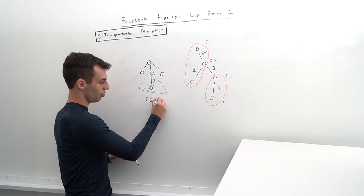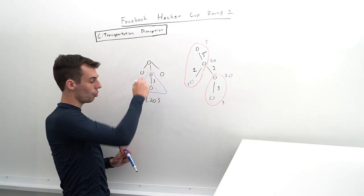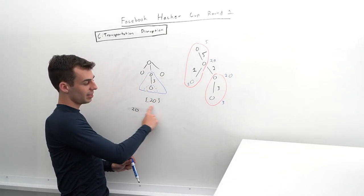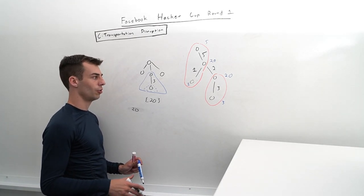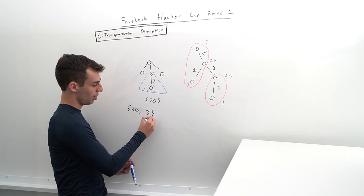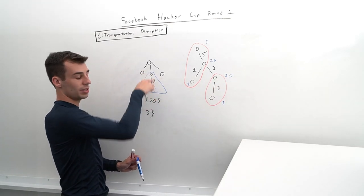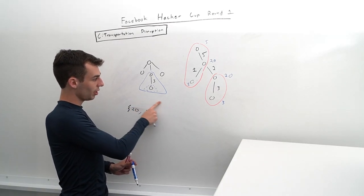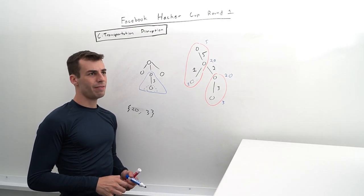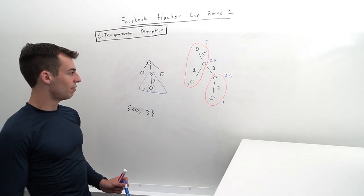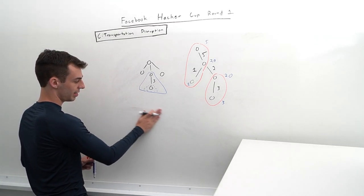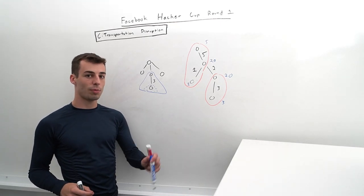For a leaf node with value 3, the set is just {20}, since it's by itself and unconstrained. When we include the edge of weight 3 connecting to its parent, the set gets a 20 added for this new node, and then everything in the set that is bigger than 3 gets pushed down to 3. So the 20 becomes a 3. This recursive process gives us the downward-facing frequency counts for all subtrees. We still need the upward-facing sets, which we get with a second DFS.